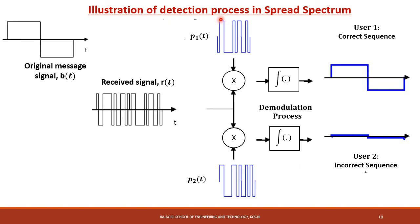This figure shows how the detection process in spread spectrum ensures secure communication. Let B(t) represent the original message signal which is spread spectrum modulated, and R(t) represent the received signal reaching two users. P1(t) represents the exact replica of the spreading code used at the transmitter side, whereas P2(t) represents a different sequence. Since P1(t) is an exact replica, User 1 will obtain the correct message signal after demodulation, whereas User 2 will not. In summary, the use of a spreading code with pseudo-random properties produces a wideband transmitted signal that appears noise-like to a receiver with no knowledge of the spreading code.